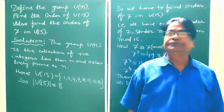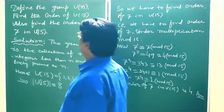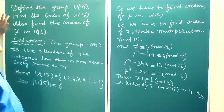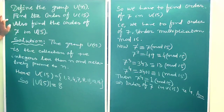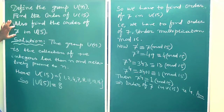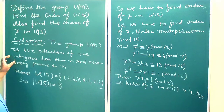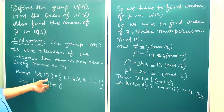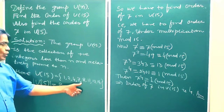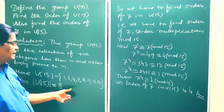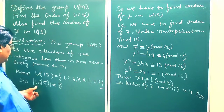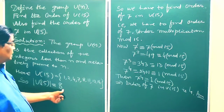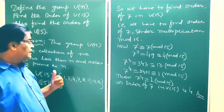So to recap: we defined the group U of N as the collection of positive integers less than N and relatively prime to N. According to this definition, U of 15 = {1, 2, 4, 7, 8, 11, 13, 14}. Therefore the order of U of 15 is equal to 8, because it contains 8 elements.